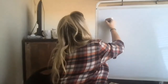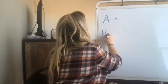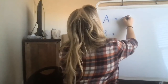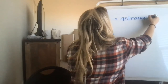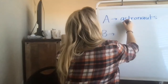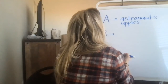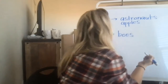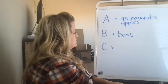So for A, you can list out things that you wonder about. Maybe you wonder about astronauts, or maybe you wonder about apples. For B, maybe you wonder about bees and how they work — how they make flowers and plants grow.